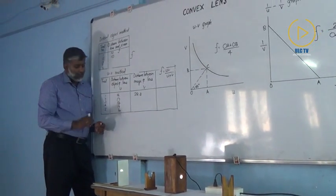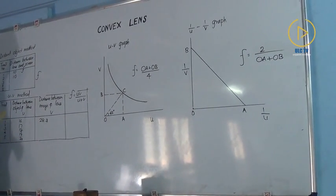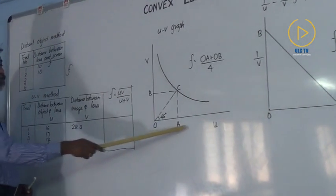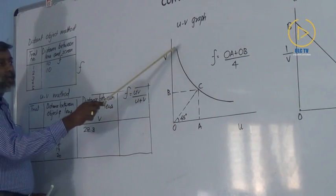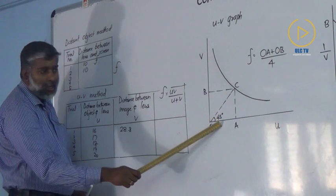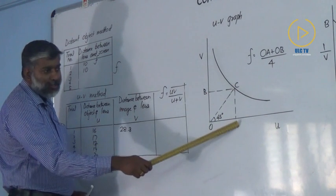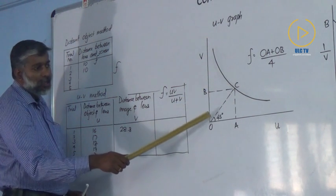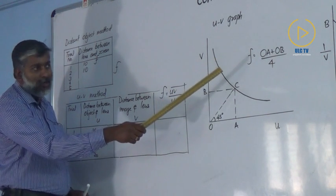Then we follow another method — it is the UV graph. For drawing the UV graph, you have the values of U on one axis and V on the other. Using the values we plot a graph, which will be of a curved shape. The full angle is 90 degrees. Draw a bisector to meet the graph at point C, then draw CA to meet the X axis and CB to meet the Y axis. The focal length can then be calculated as F = (OA + OB) / 4.